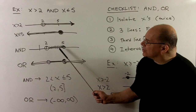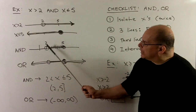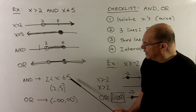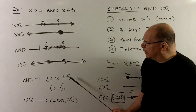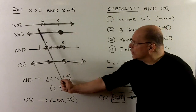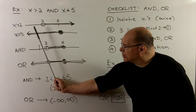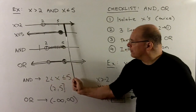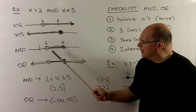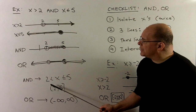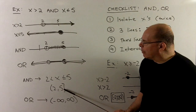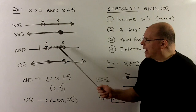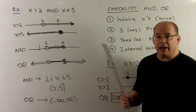Translating the answer: this is all x between 2 and 5, keeping the 5, so we write 2 less than x less than or equal to 5. In interval notation, we go from 2 to 5 — parenthesis on the 2 since we're not keeping it, bracket on the 5 since we are. That's everything for the AND case.